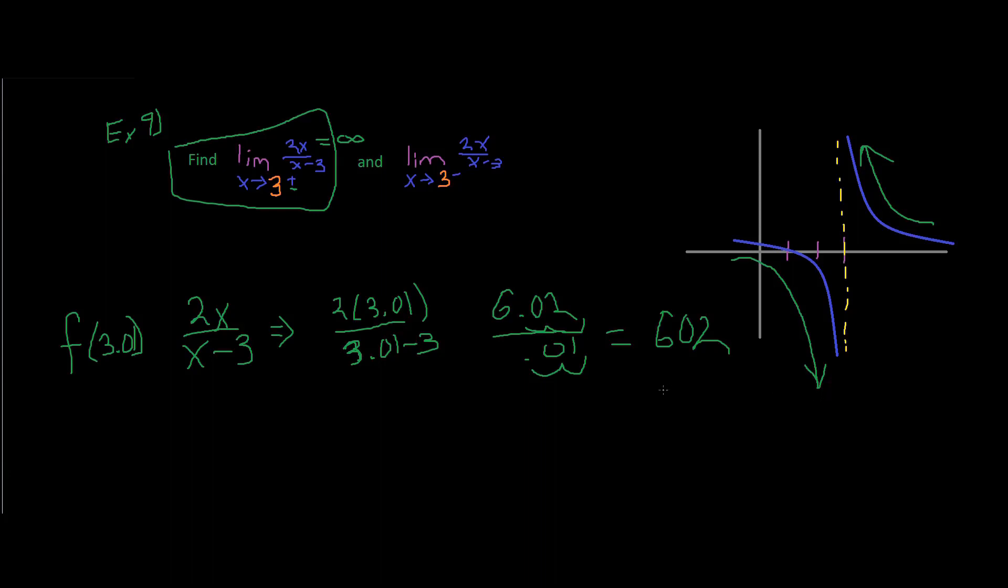And so, likewise, if we plug in a number relatively close for this part of our example. Let's say we plug in 2.99, right? Because that's relatively close to that side of the problem. So, let's say, over here, it's going to be 2 times 2.99. If you're ahead of me, you could work out the problem.